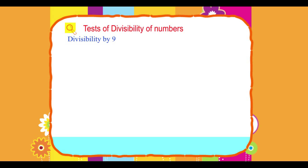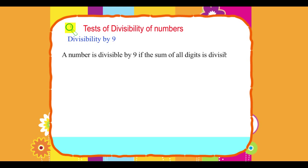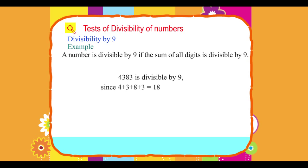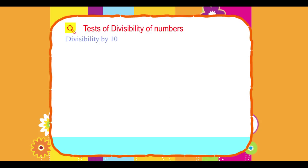Divisibility by 9: A number is divisible by 9 if the sum of all digits is divisible by 9. Example: 4383 is divisible by 9 since 4 + 3 + 8 + 3 = 18, and 18 is divisible by 9.